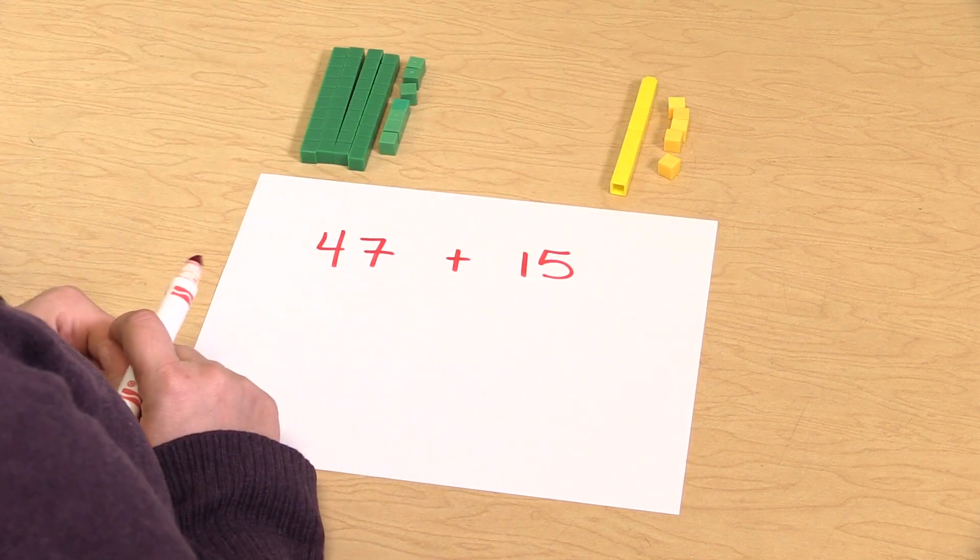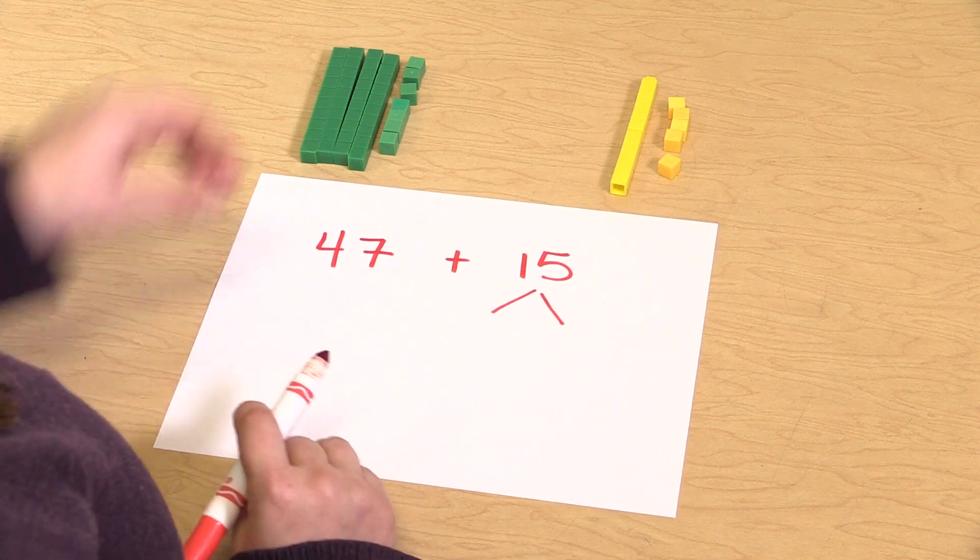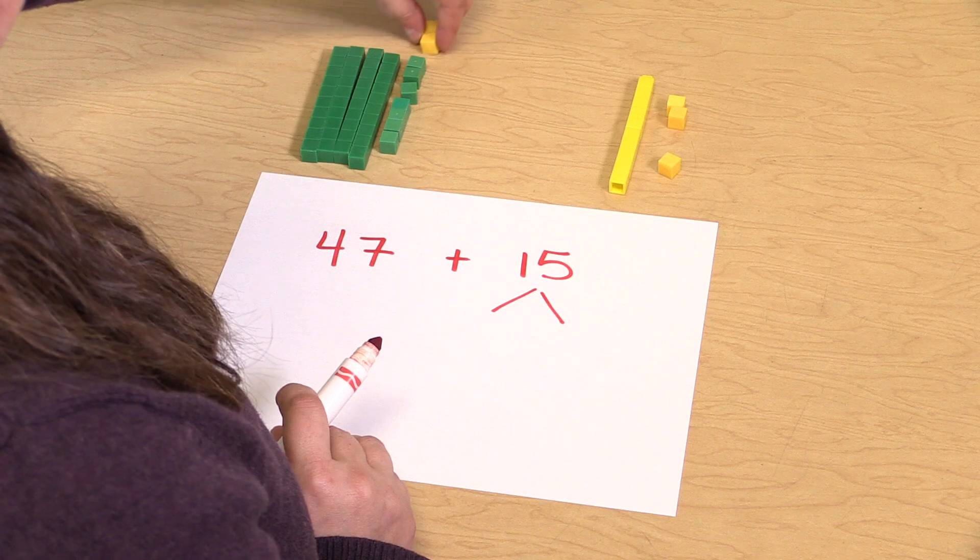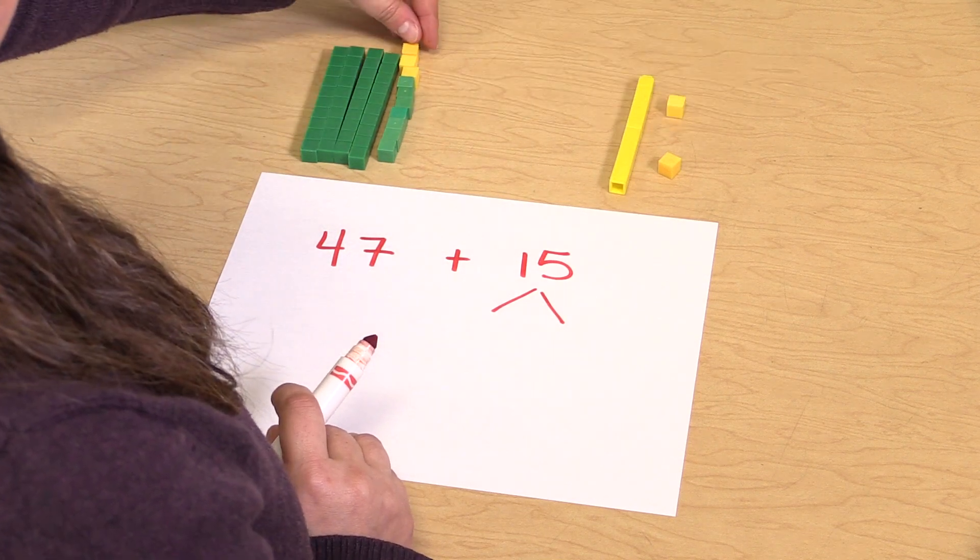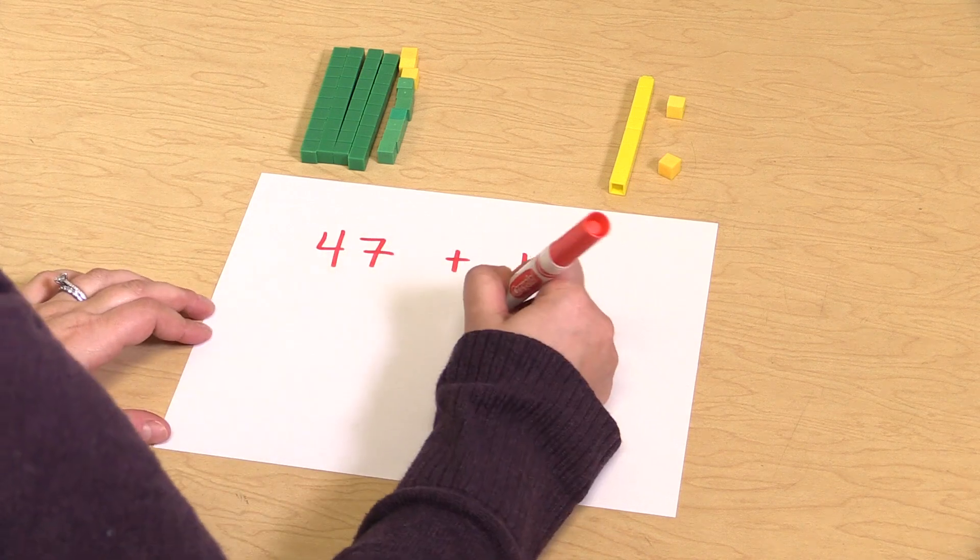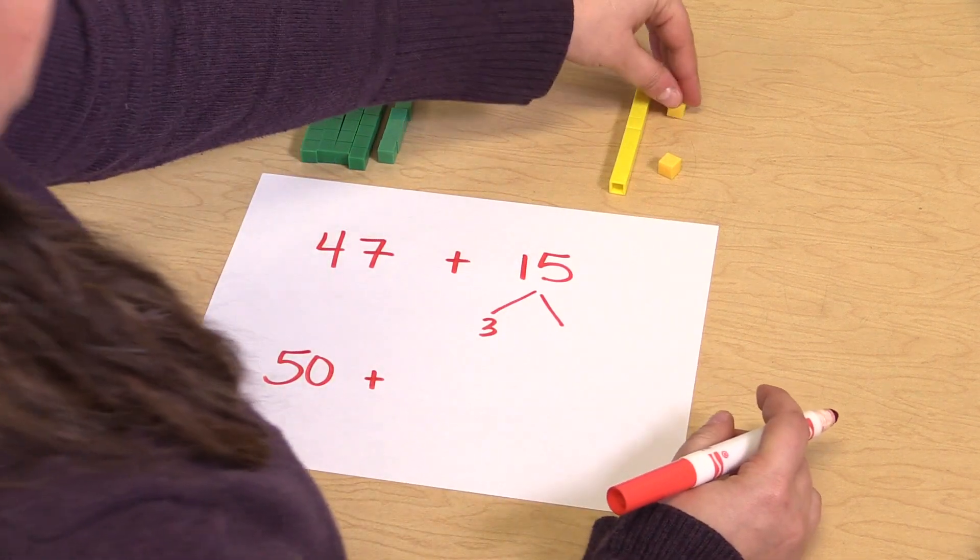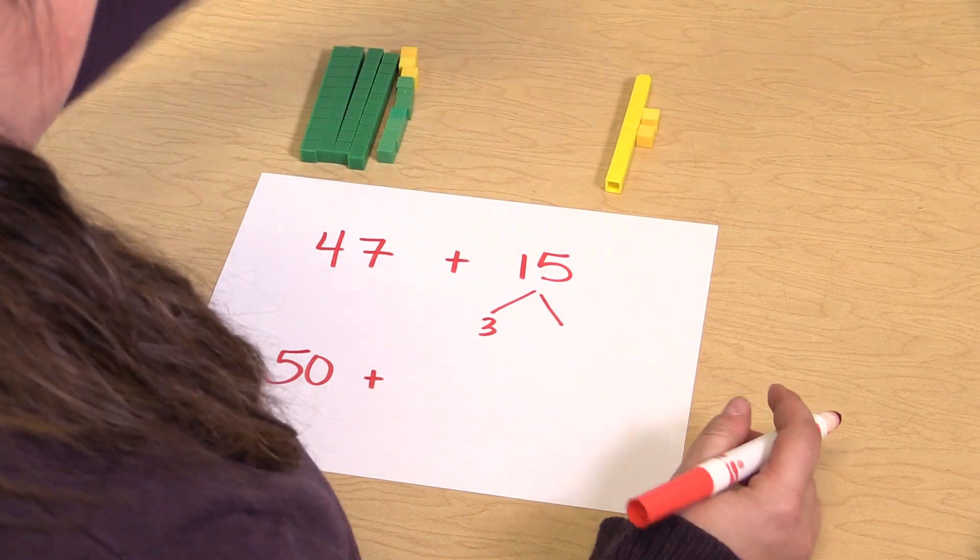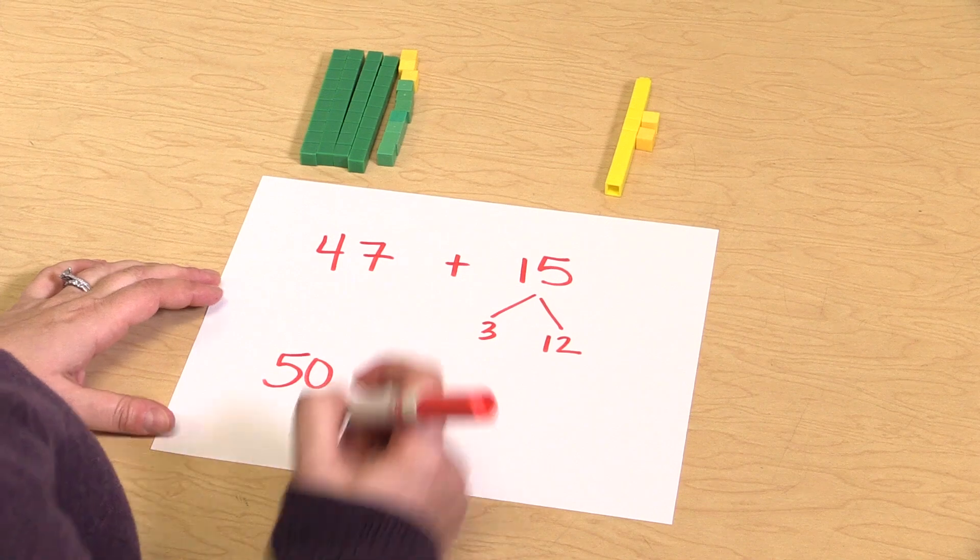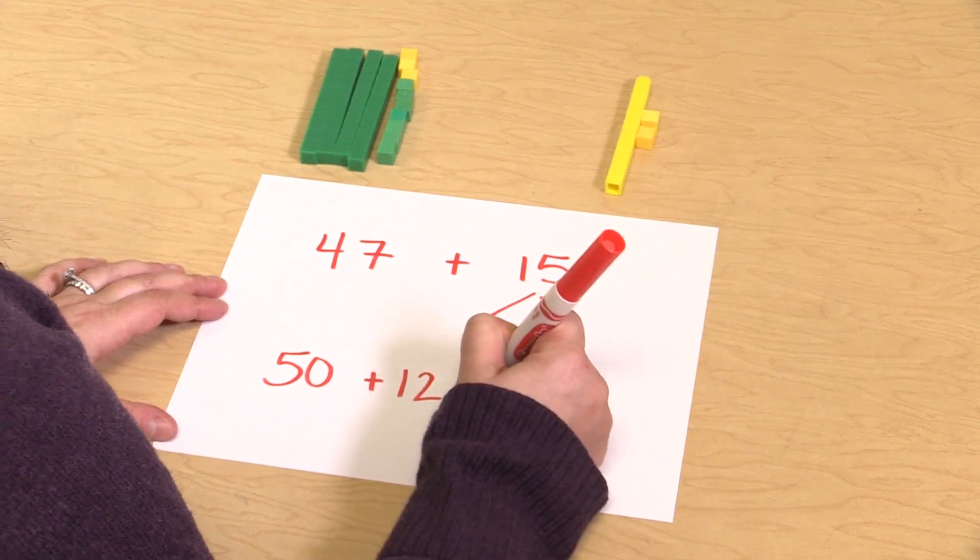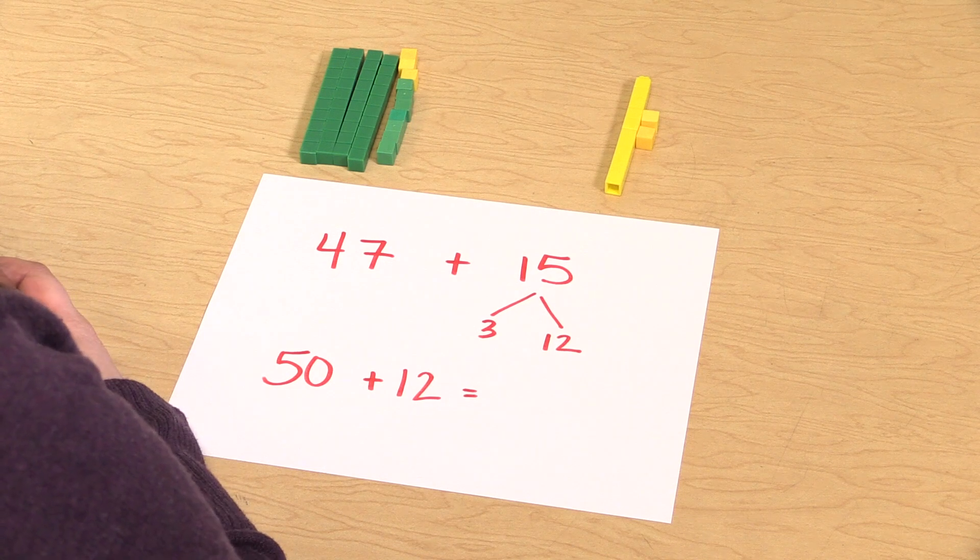And now they would make a ten by breaking apart the fifteen. They would need to know that they would need three ones to turn their forty-seven into a fifty, and that they would have their leftover of twelve, and then they would be able to add fifty plus twelve, which would be the same as forty-seven plus fifteen.